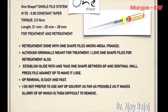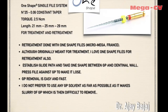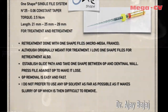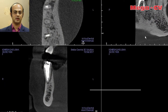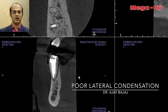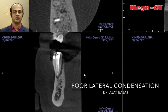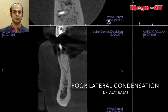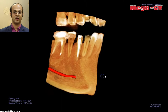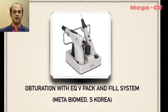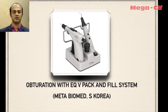The retreatment of this case was done with One Shape, although it was originally meant for treatment. I prefer using it for retreatment because GP removal is easy and fast. I do not prefer to use GP solvents, as a slurry is formed with the gutta-percha and that slurry is always difficult to remove — it gets into cracks and crevices and becomes really difficult to clean.